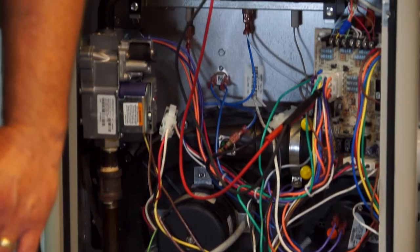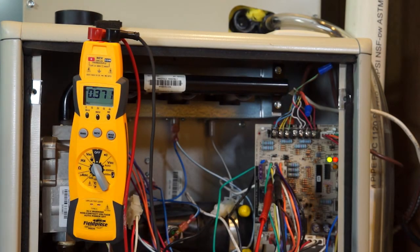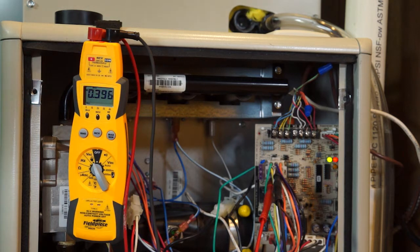So without further ado, we're going to move on and I'm going to show you what it does when you have high resistance in it. Okay, so here we go. The furnace is starting its ignition cycle. The inducer is starting and after we finish our pre-purge with the inducer running, then we should see the igniter start to glow. And that should be happening here in just a second.